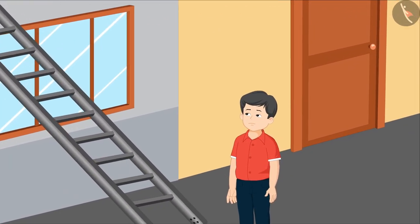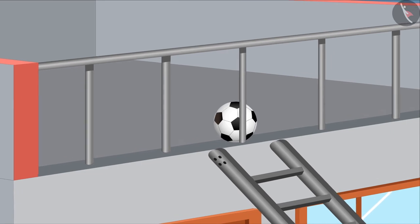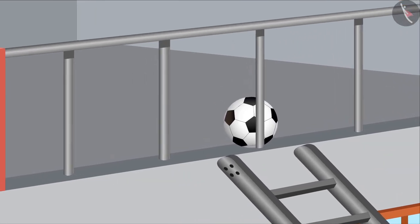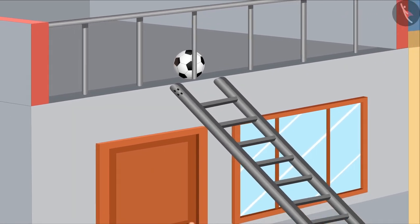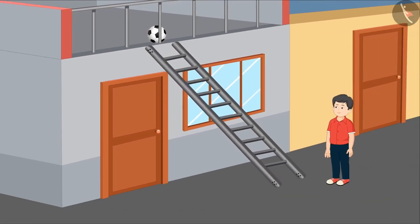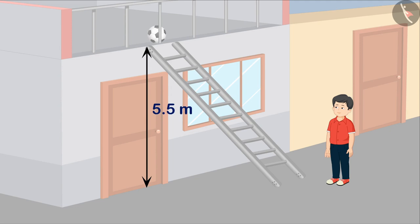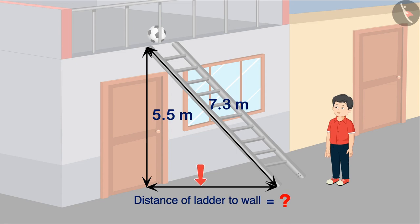Let's see what Vishal is doing. Vishal's ball is stuck on the roof. To bring it back, he has put a ladder against the wall in this way. The height of the roof is 5.5 meters and the length of the ladder is 7.3 meters. Can you tell how far Vishal has placed the ladder from the wall?